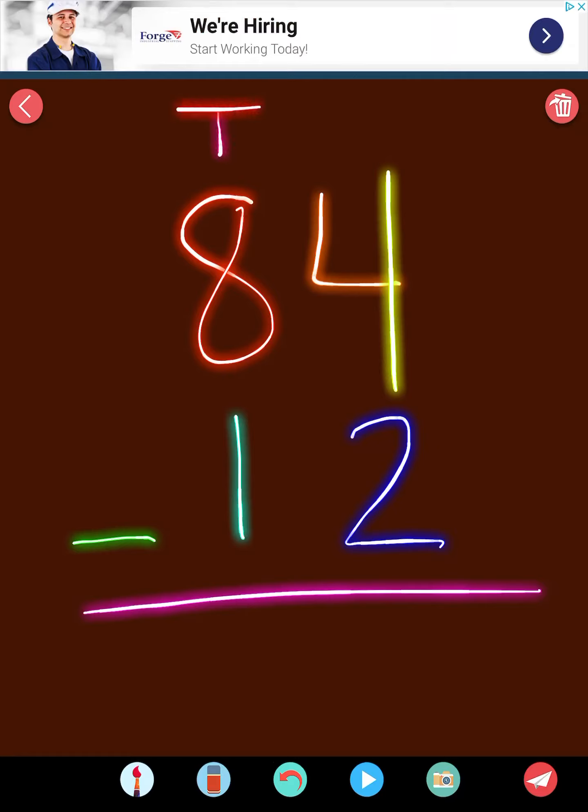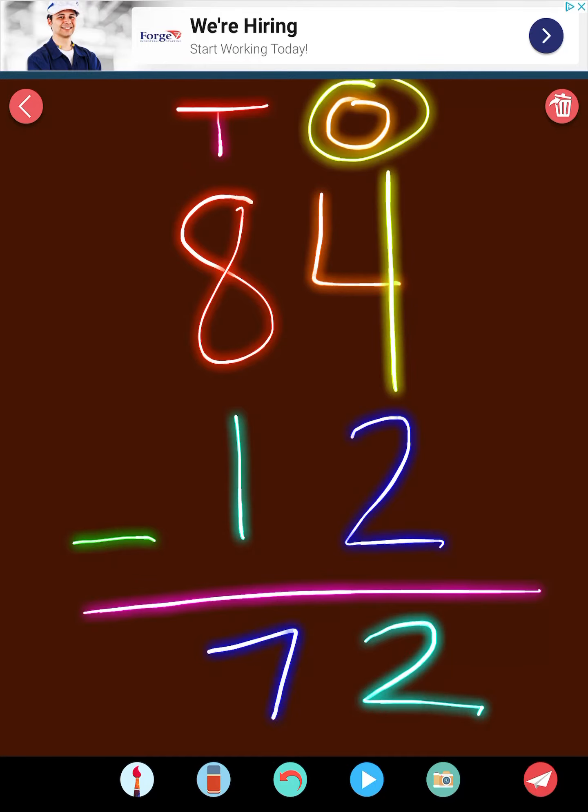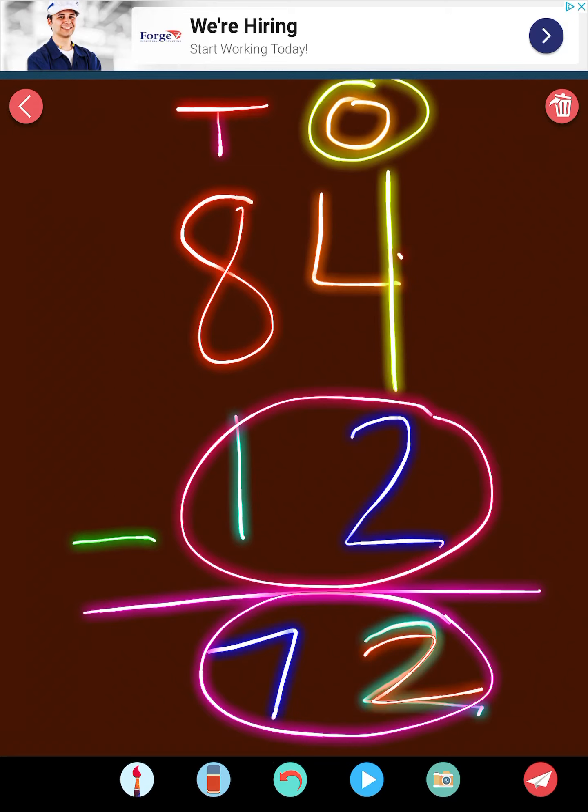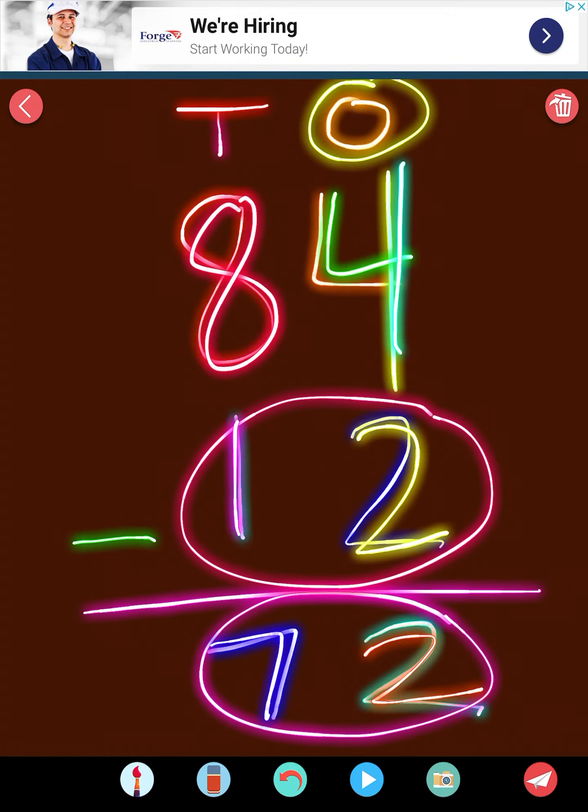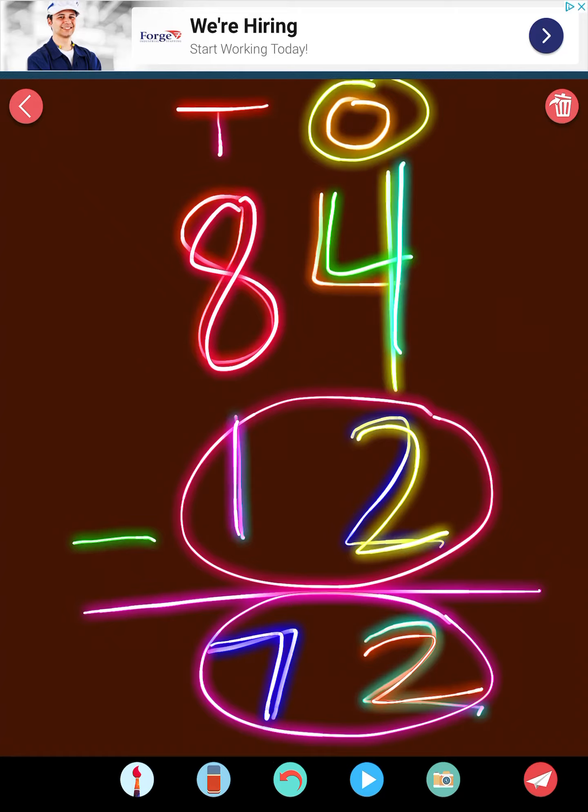All right, so let's see if you got your answer right. Tens and ones. We start with our ones. 4 minus 2 is 2. And 8 minus 1 is 7. So the answer is 72. So 72 plus 12 equals 84. And look, I can see that. 2 plus 2 equals 4. 7 plus 1 equals 8. So 84 minus 12 is 72.